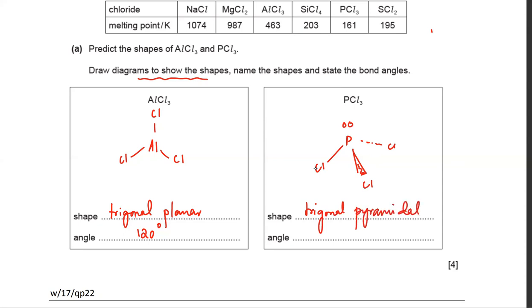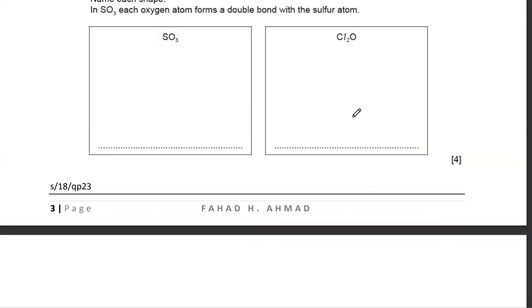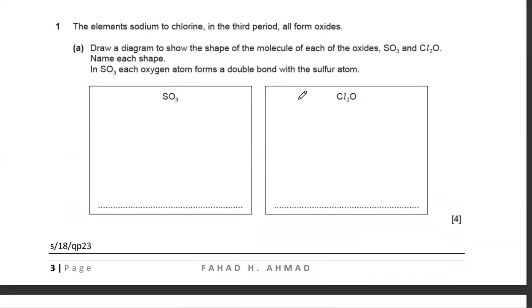The angle in the trigonal pyramidal shape is 107 degrees. Always watch out for lone pairs when determining shape.